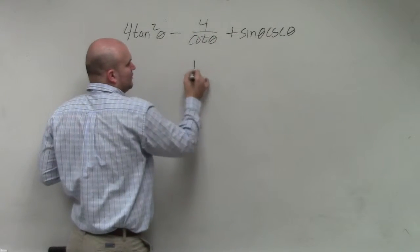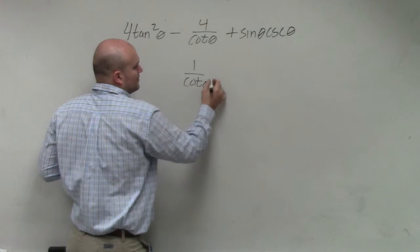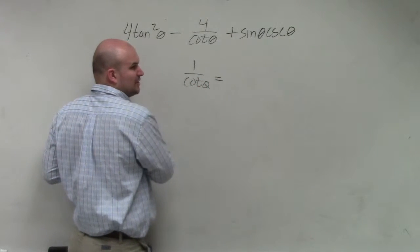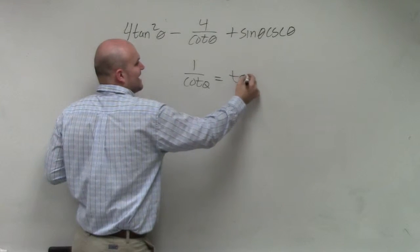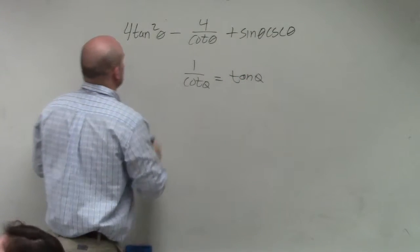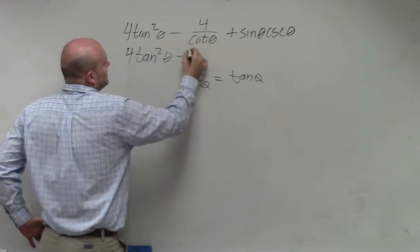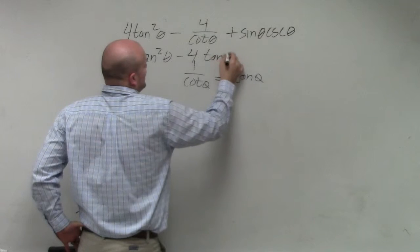However, this is really 1 over cotangent, right? That's equivalent to what? What's 1 over cotangent really equivalent to? Tangent of theta. So I can rewrite this as 4 tangent squared of theta minus 4 tangent of theta.